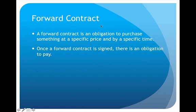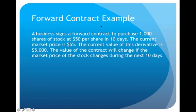The first example of a derivative we're going to talk about is something called a forward contract. Sometimes businesses or even individuals will sign these contracts. Basically, a forward contract is an obligation to purchase something at a specific price by a specific time. It could be anything from stock to oil to any kind of resource or product, and once that forward contract is signed you are legally bound and obligated to settle the contract.